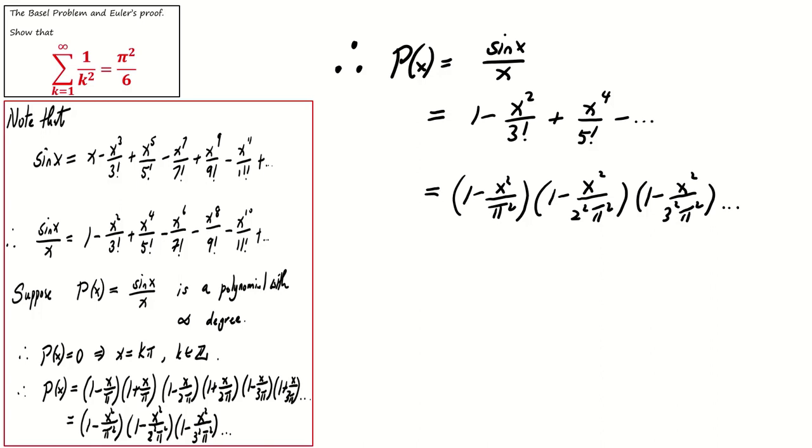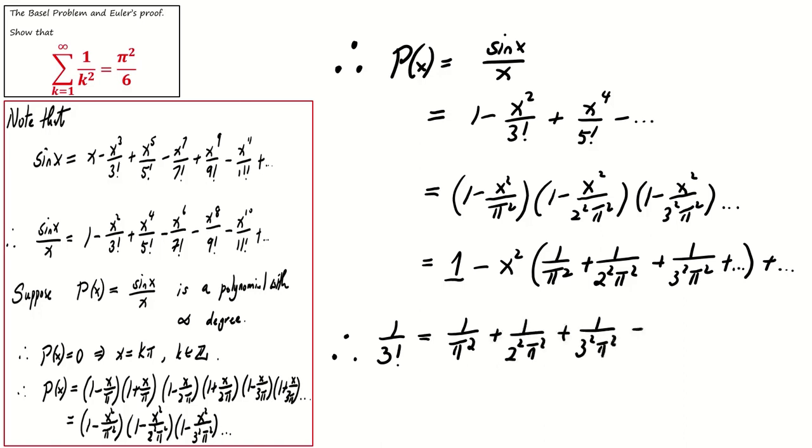The series starts with 1, followed by negative x squared times (1 over pi squared plus 1 over 2 pi squared plus 1 over 3 pi squared), and so on. Comparing the coefficient of the term in x squared, we obtain 1 over 3 factorial equals (1 over pi squared plus 1 over 2 pi squared plus 1 over 3 pi squared), and so on.